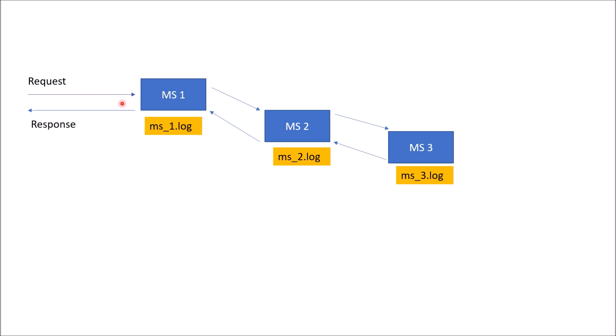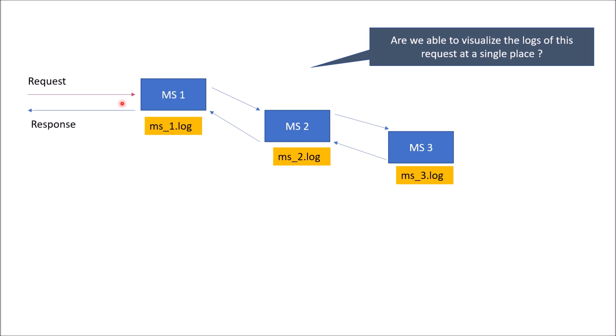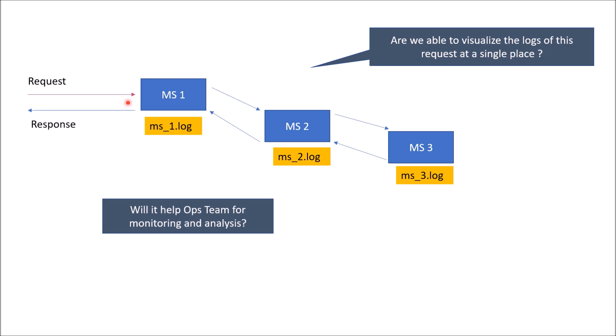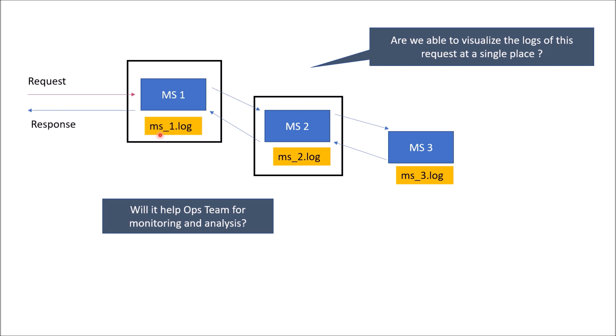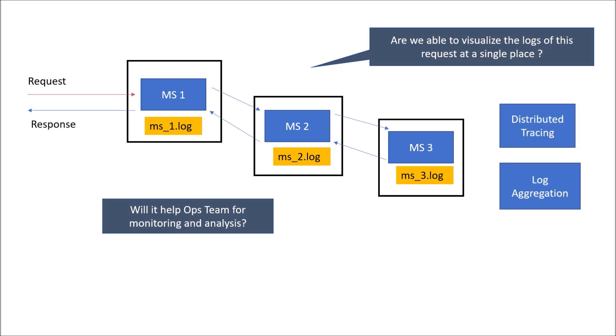This request coming to microservice1 is spanning over microservice2 and microservice3. Are you able to visualize the logs of this request at a single place? If any error comes, will it help the operations teams to see the stack trace? Will the operations team be able to monitor and analyze the applications properly? The answer would be no. The reason is ms1.log scope is limited to microservice1, ms2.log to microservice2, and ms3.log to microservice3. In order to answer these questions, we would need the concept of distributed tracing and log aggregation.